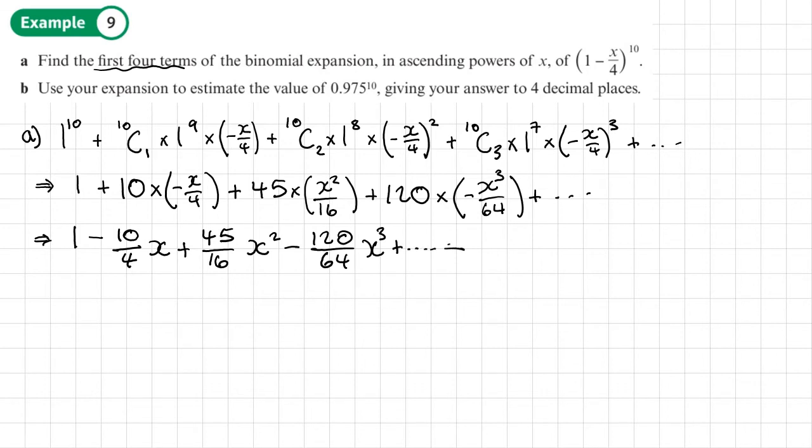Now some of these fractions can be simplified, so I'll probably change the 10 over 4 to 5 over 2. The 45 over 16 can't be simplified, so I'll just leave that as 45/16 X^2. And then the 120 over 64, that becomes 15 over 8, so -15/8 X^3. There are other ways of writing it, but I personally prefer to keep these as fractions.